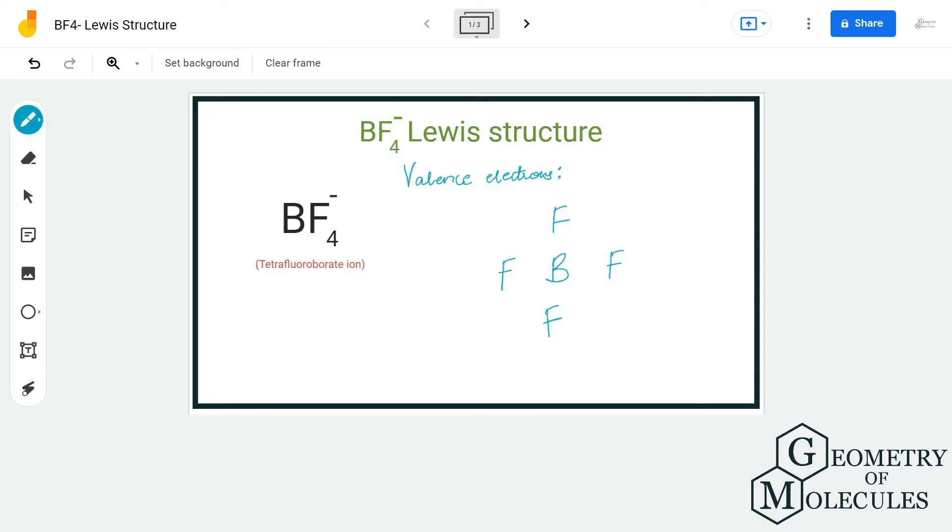Hi guys, welcome back to our channel. In today's video we are going to help you with BF4 minus Lewis structure. It is a chemical formula for tetrafluoroborate ion. To find out its Lewis structure, we will first look at the total number of valence electrons for this molecule.